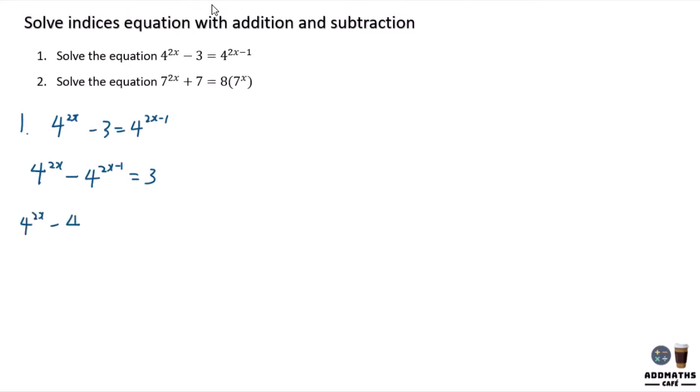4^(2x) - 4^(2x) × 4^(-1) = 3. Because of subtraction and addition, you need to let something equal to a variable.